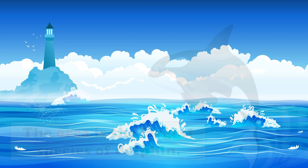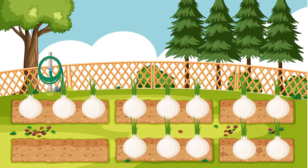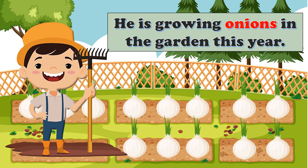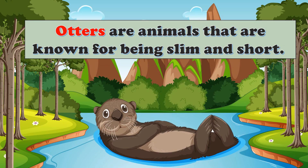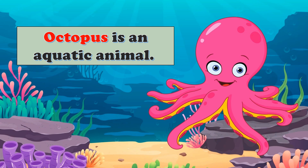Let's read together. The orca is the largest species of dolphin. He is growing onions in the garden this year. Otters are animals that are known for being slim and short. The chef loves cooking omelette. Octopus is an aquatic animal.